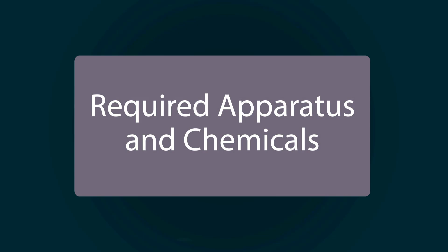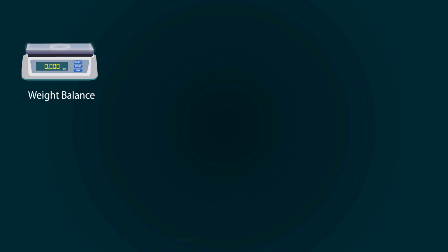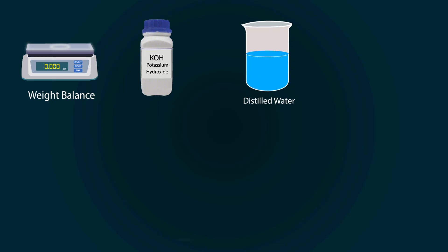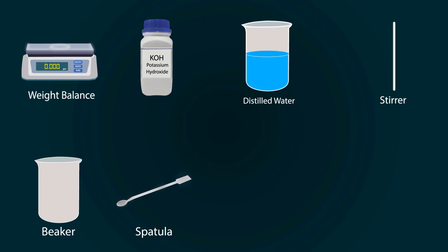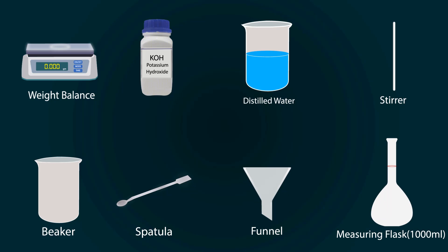Required apparatus and chemicals are: a weight balance, potassium hydroxide, distilled water in a beaker, stirrer, empty beaker, spatula, funnel, and a volumetric flask of 1000 milliliters.